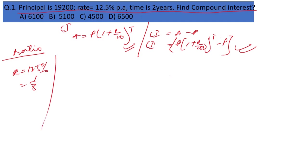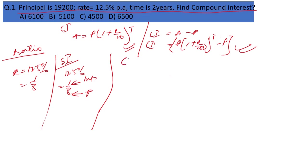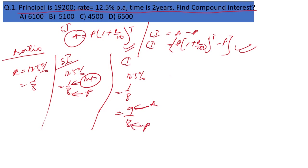For the ratio method, 12.5% equals 1/8, where 1 is the interest and 8 is the principal. In compound interest, the rate 12.5% equals 1/8, but since compound interest is calculated upon the amount, we use 9/8 — where 9 is the amount and 8 is the principal.